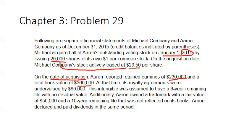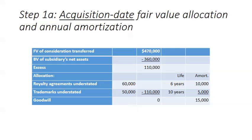The total book value at the date of acquisition was $360,000 — it's very important we use the book value at the acquisition date. At that time, royalty agreements were undervalued by $60,000, which will be one of our allocations. These intangible assets have a six-year remaining life with no residual value. They also owned a trademark with a fair value of $50,000 and a 10-year remaining life that was not reflected on the books.